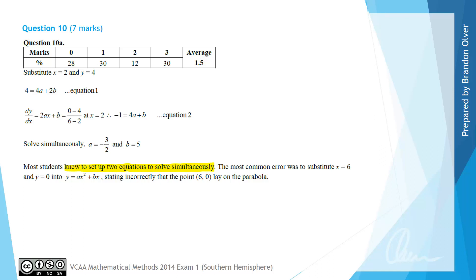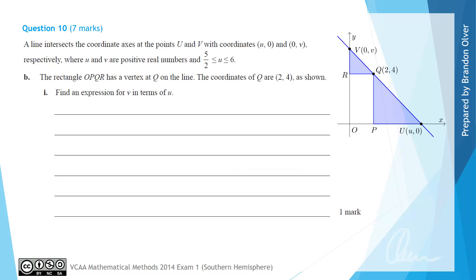For part B, considering the same line, there is a rectangle OPQR with a vertex at Q lying on the line connecting U and V. The coordinates of Q are (2, 4). For part B(i), we need to find an expression for V in terms of U. Since U, V, and Q all lie on the same line, the gradient of VQ equals the gradient of QU.